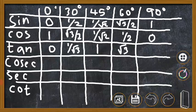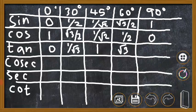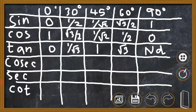For tan 90: sin 90 divided by cos 90 is 1/0. When the denominator is 0, division is not defined, so we write 'not defined' or ND. So to summarize: memorize only the sin values, write cos in reverse order of sin, and calculate tan using sin theta divided by cos theta.